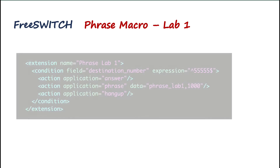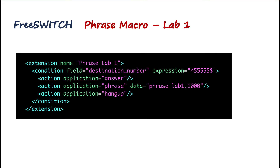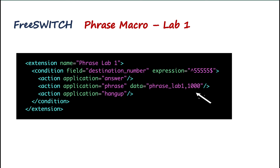After the phrase macro definition, we need to call it in the FreeSWITCH dial plan. A testing destination number is defined, the channel is answered, and the phrase macro is called using the application keyword 'phrase'. The phrase macro name and input — in this case 1000 — are passed as data, and finally the call is hung up.